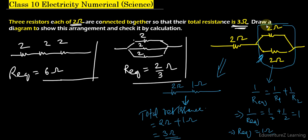So if we connect two in parallel and one in series, we get a total resistance of 3 ohms. This is the final answer. I hope that you have understood this question. Thank you so much for watching.